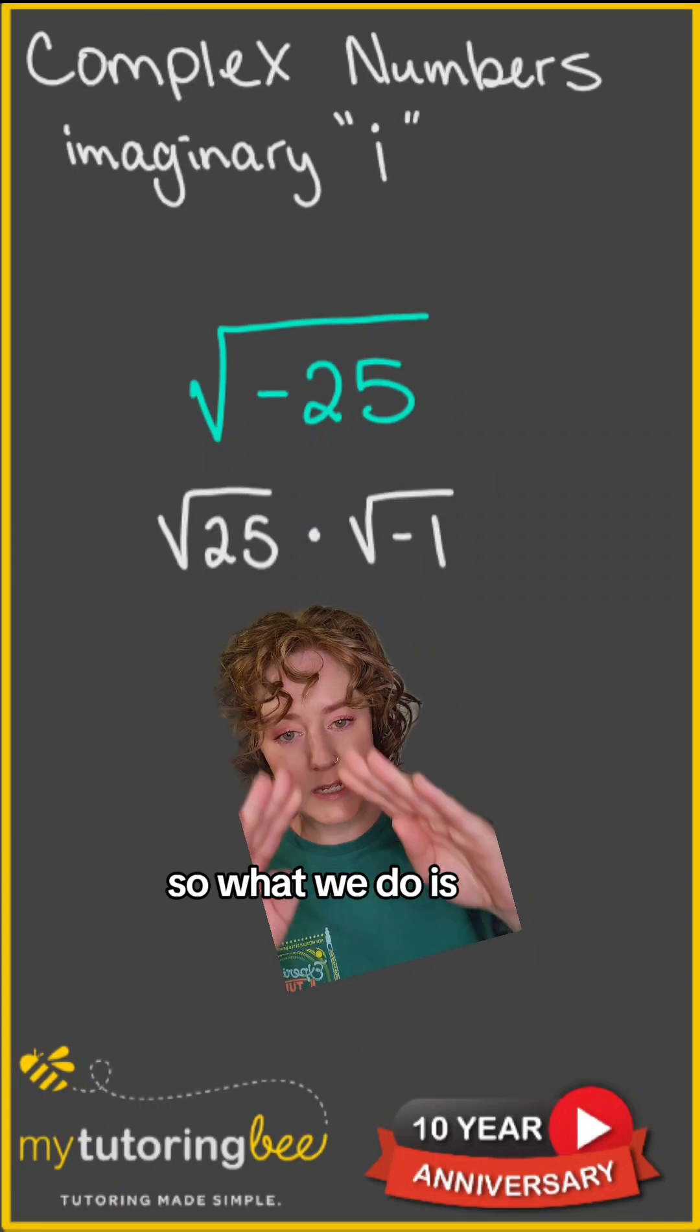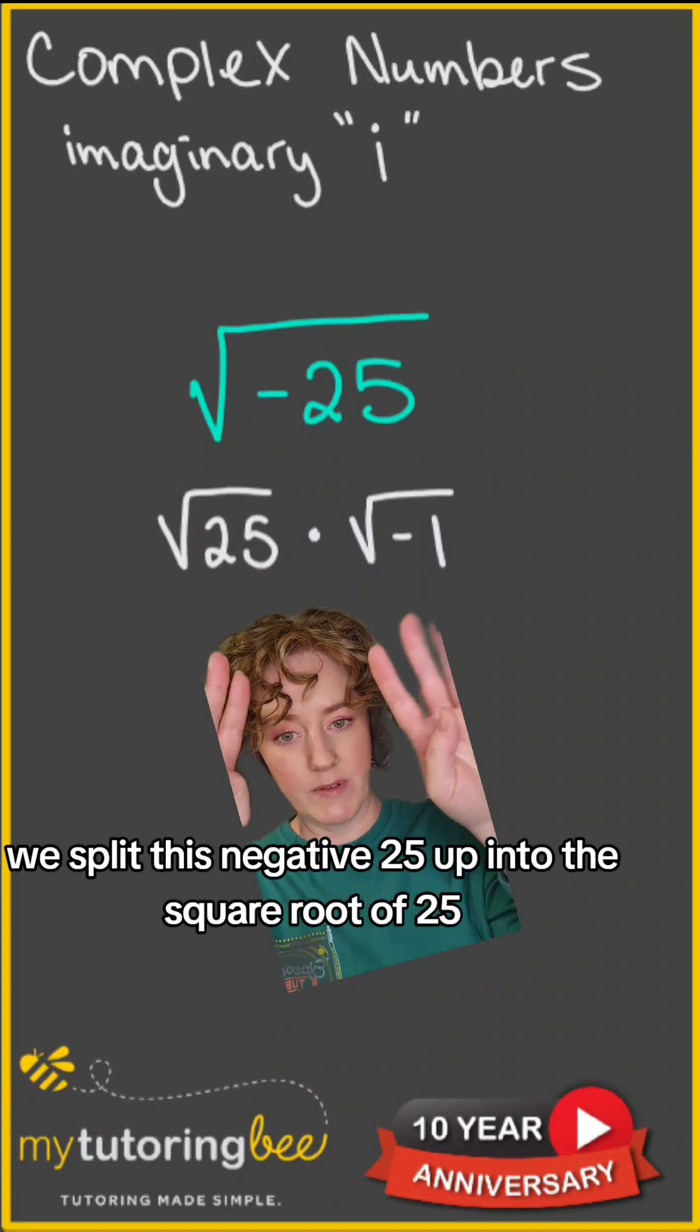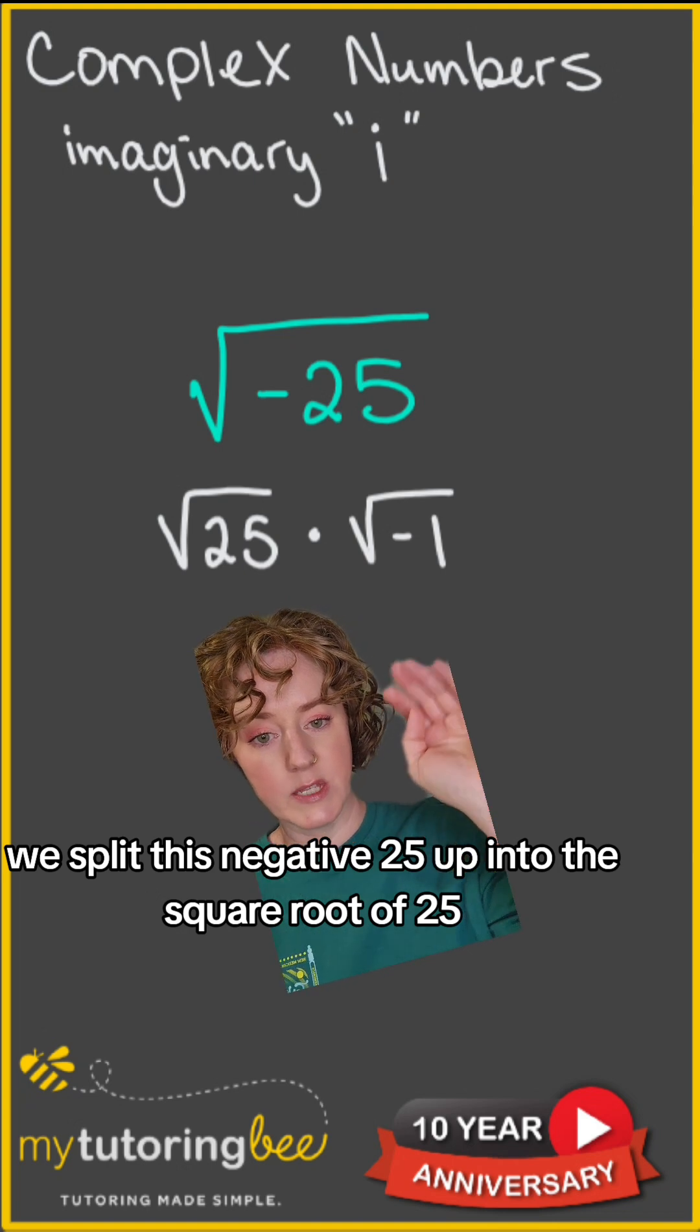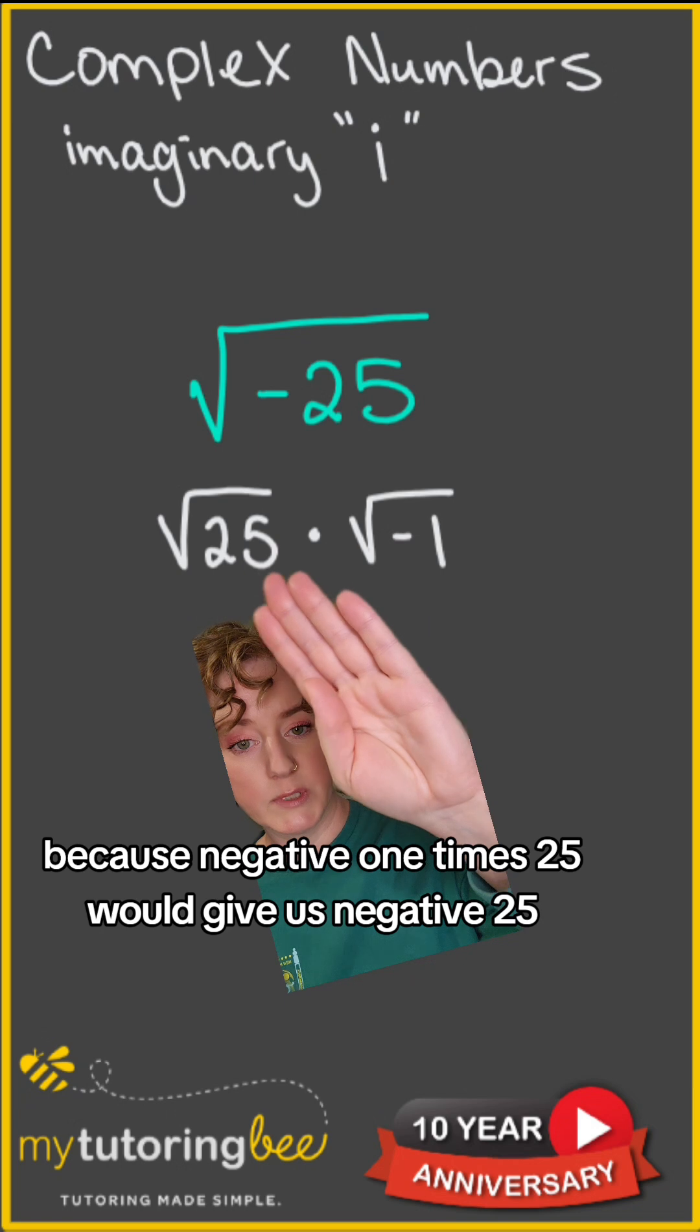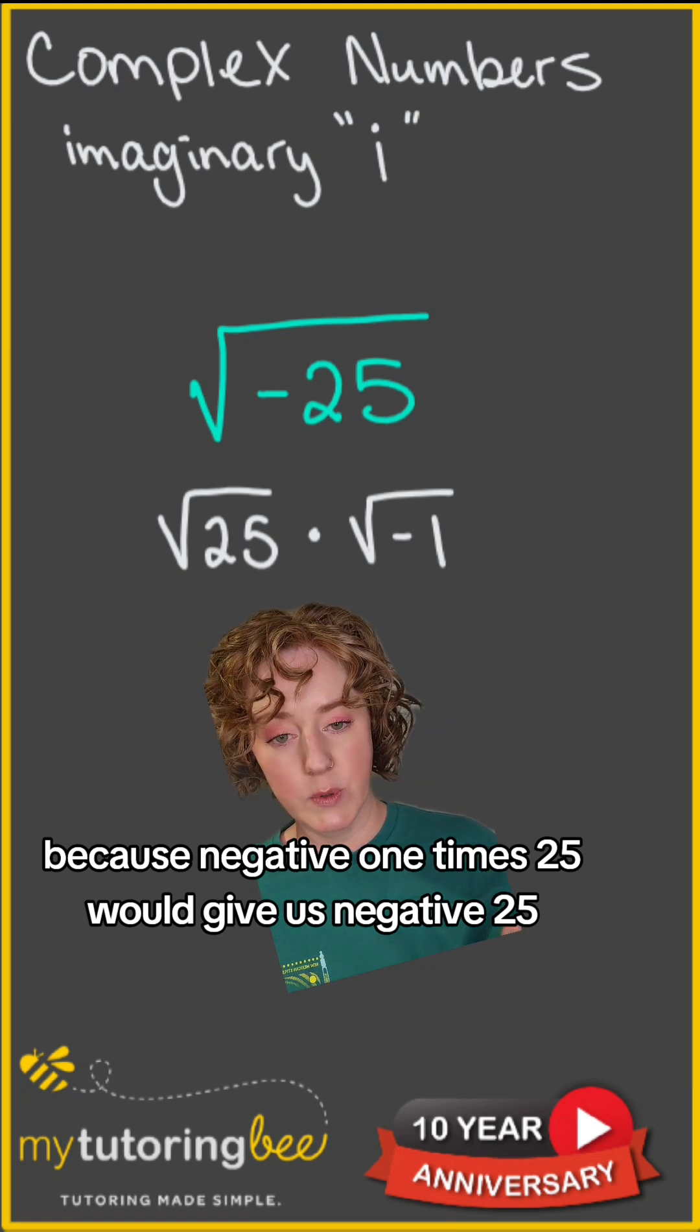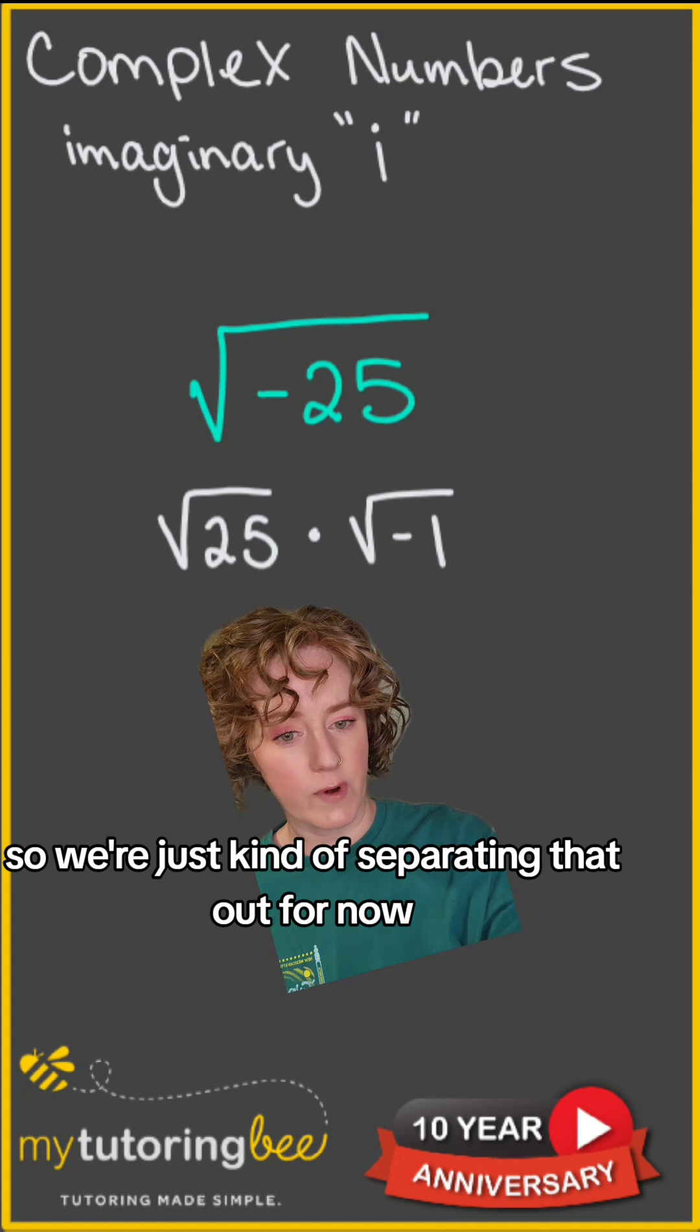So what we do is split this negative 25 into the square root of 25 and the square root of negative 1, because negative 1 times 25 gives us negative 25. We're just separating that out for now.